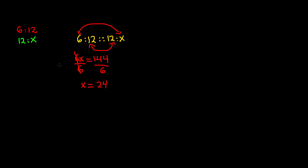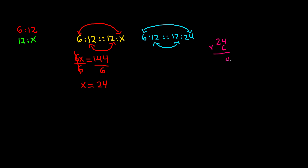We can plug that in to verify. We have six to twelve and twelve to twenty-four. Multiplying the outer numbers, six times twenty-four gives us 144. And twelve times twelve is also 144. Since 144 equals 144, this proportion is correct and the value of x is twenty-four.